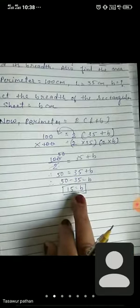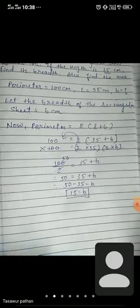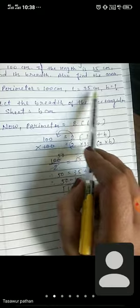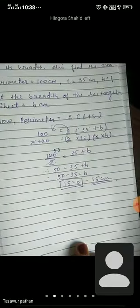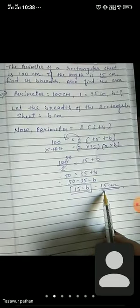Now do subtraction. Subtract 35 from 50. So answer will be 15. So here we got our breadth, B is 15. If perimeter is 100 cm and length is 35 cm, so B will be 15 cm. This is our answer. Our breadth is 15 cm.